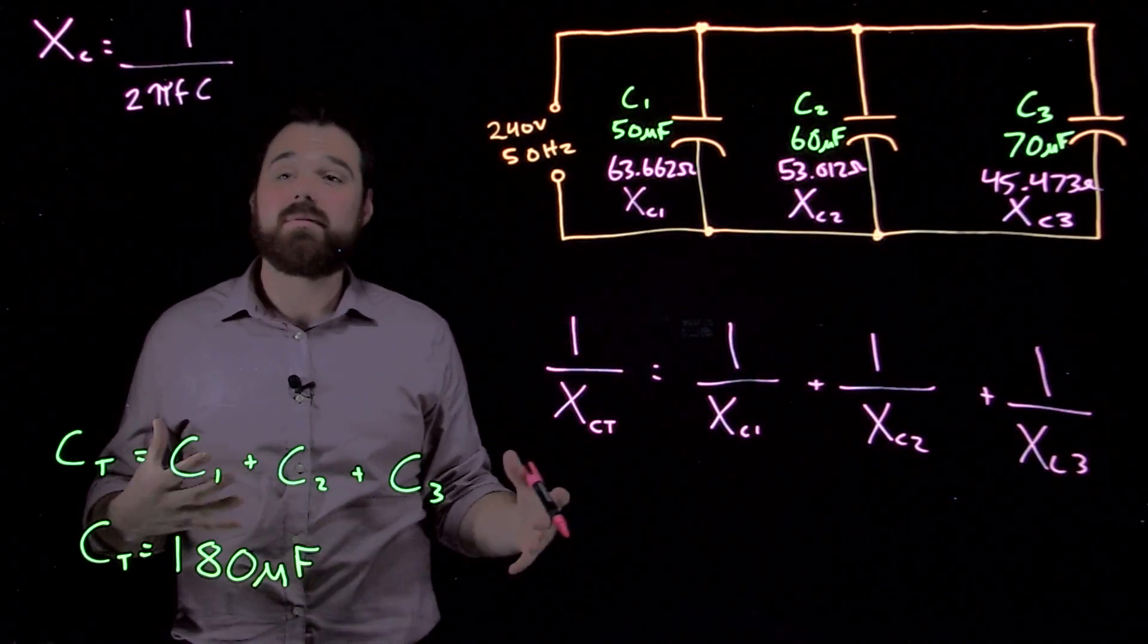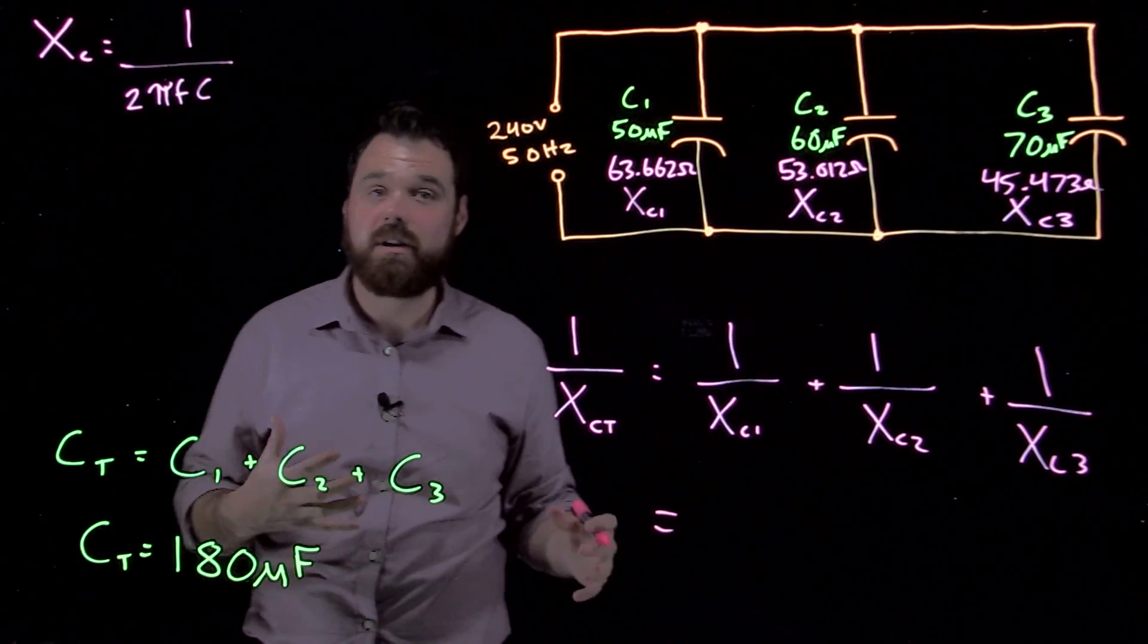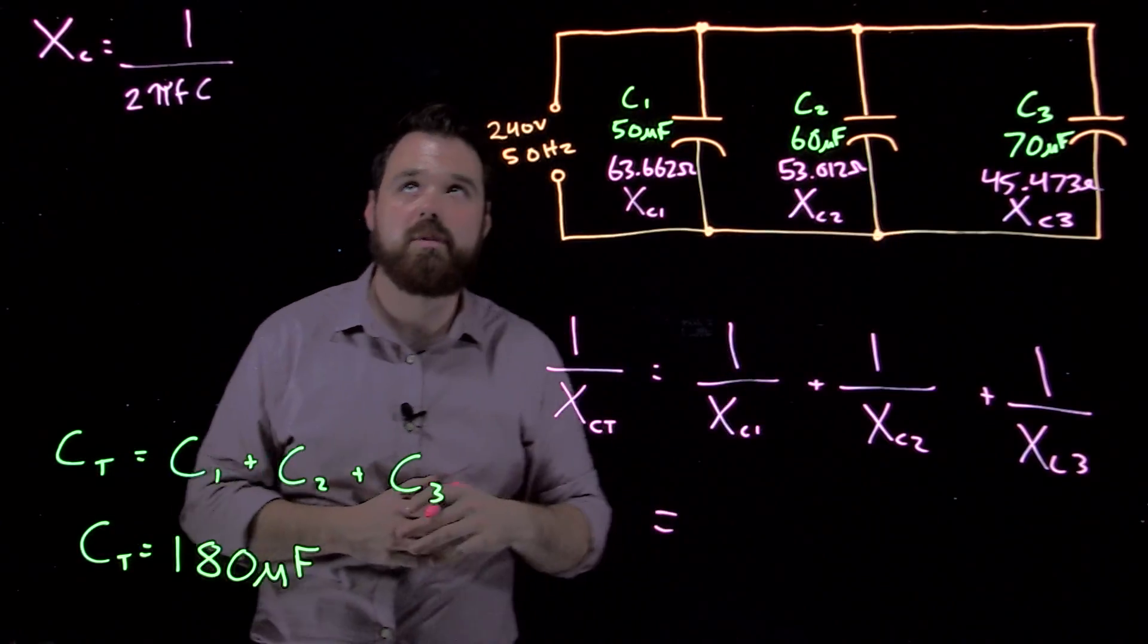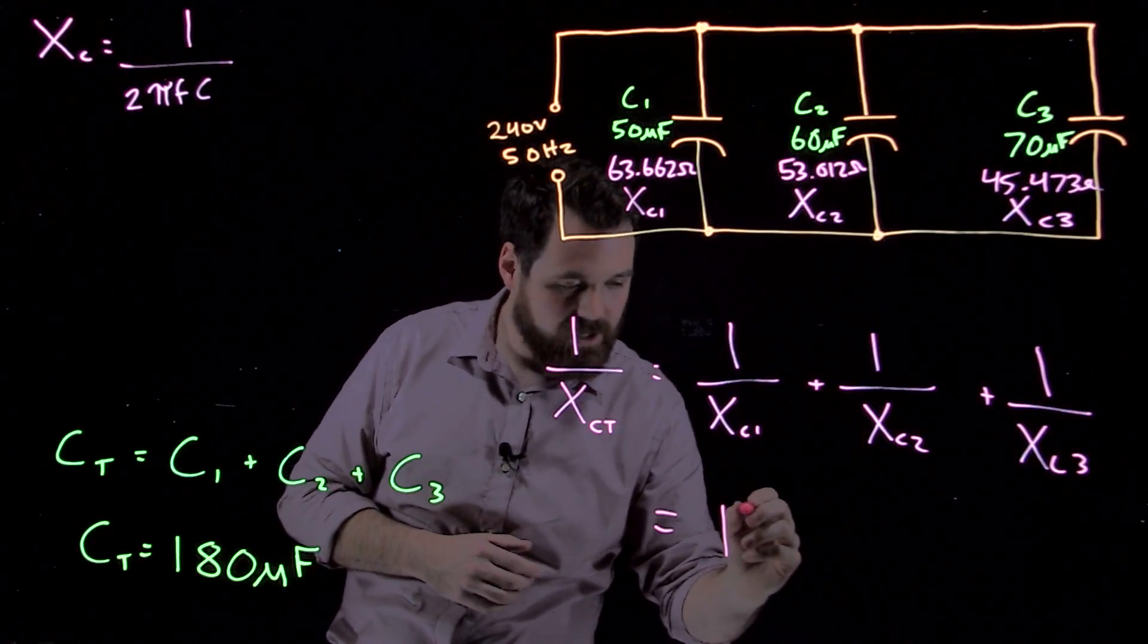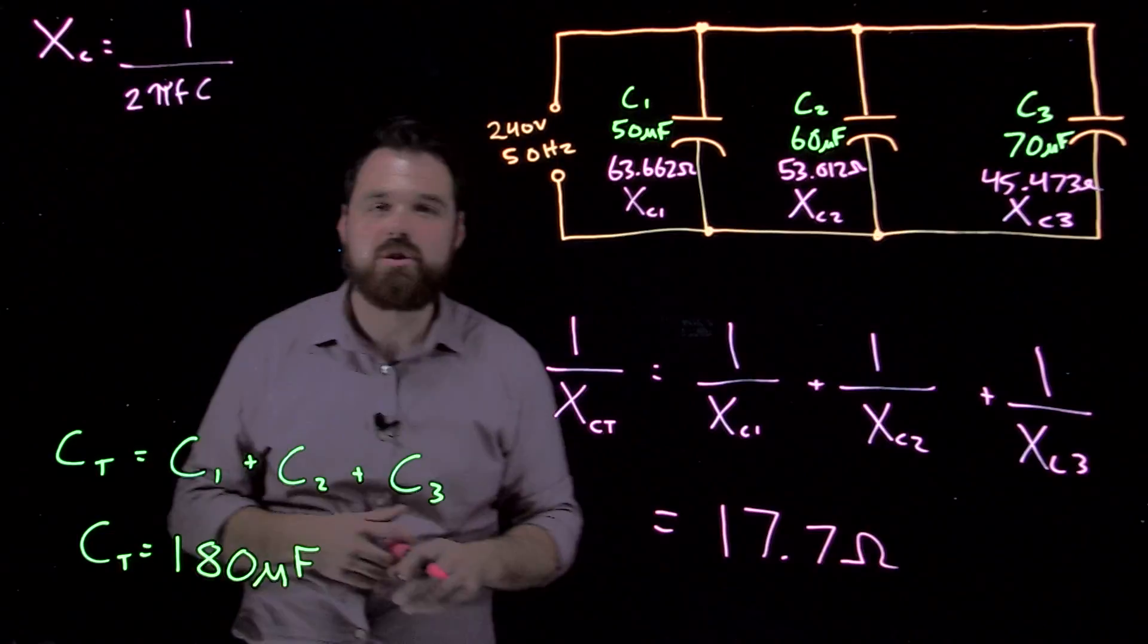So we can do the inverse calculations, type it into our calculator. At the end of the day, we are expecting a number smaller than each of the individual branches, and we get around 17.7 Ohms.